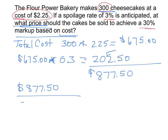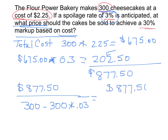Now you might want to say that's 300, but you also have to take into account the spoilage, so we have to subtract those out. The number that's going to be spoiled is 3% of 300, which is actually 9. So in other words, 9 of these cheesecakes are going to be spoiled.